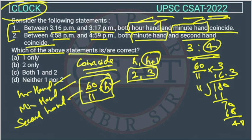So they will coincide at 3 past, and this is minute, 16 by 3 minute. They are meeting between 3:16 p.m. and 3:17 p.m. because this point 3 is there. So this statement is correct. We have found it out.